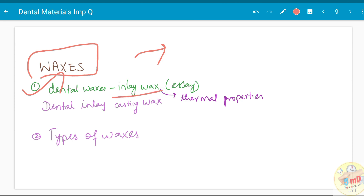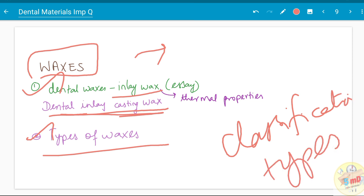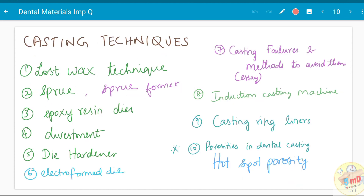Dental waxes have been asked — refer to our video on waxes. Inlay wax has been asked in detail as a short-answer question; dental inlay casting wax has been asked as an essay. Types of waxes should be known. Before starting any chapter, be sure to read the classification and types first, then dive into detail, as questions tend to start with classification before asking about a specific type. Casting techniques — the lost wax technique is a very important question, including its components: sprue, sprue former.